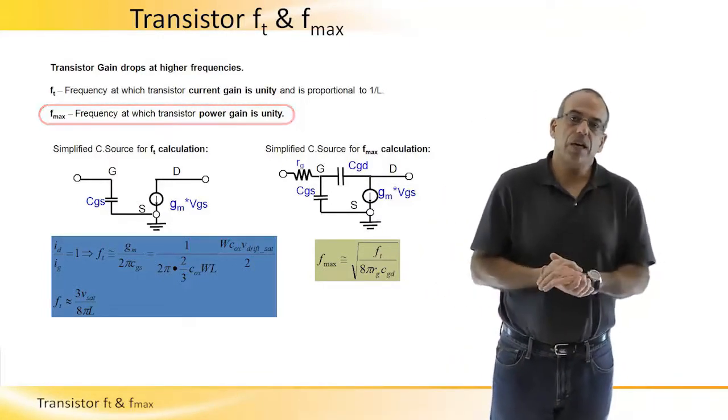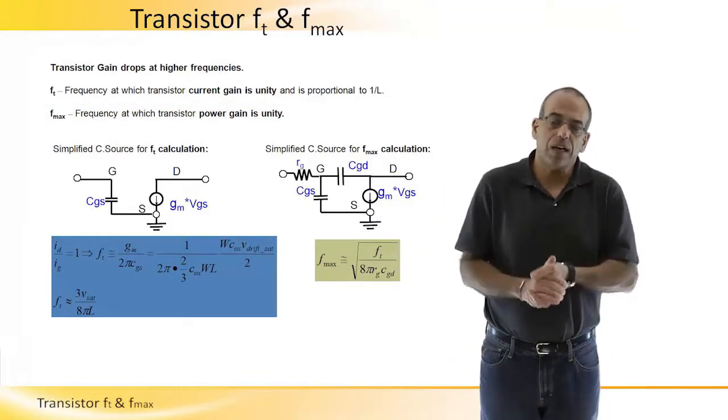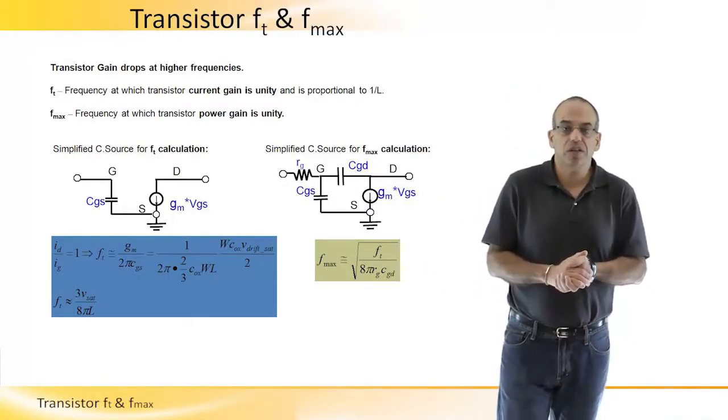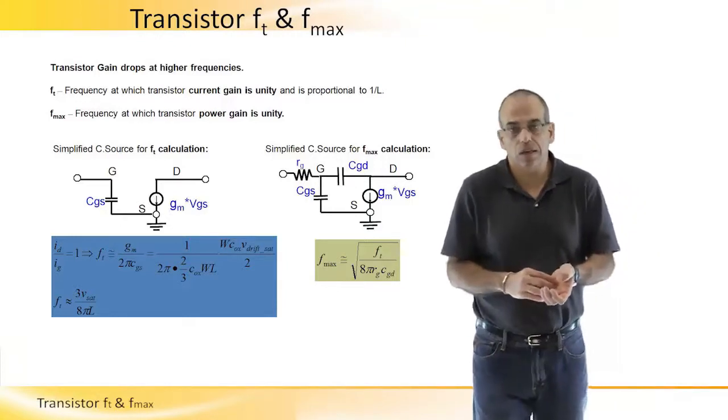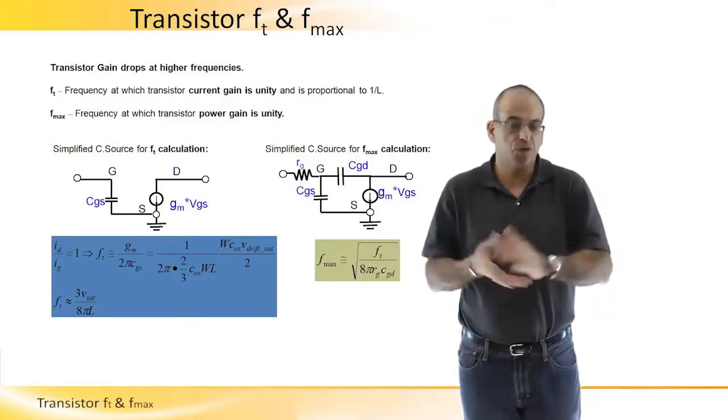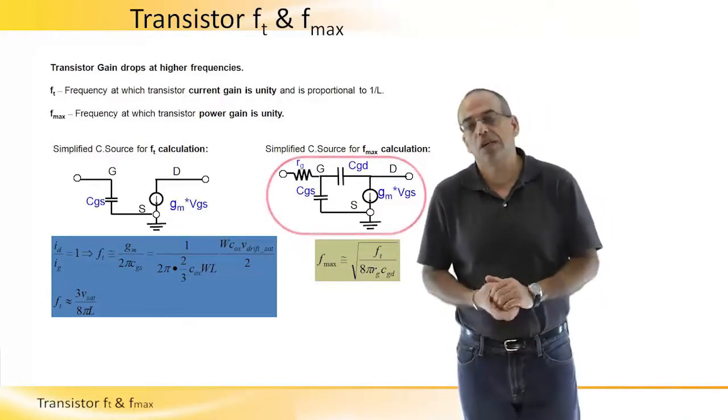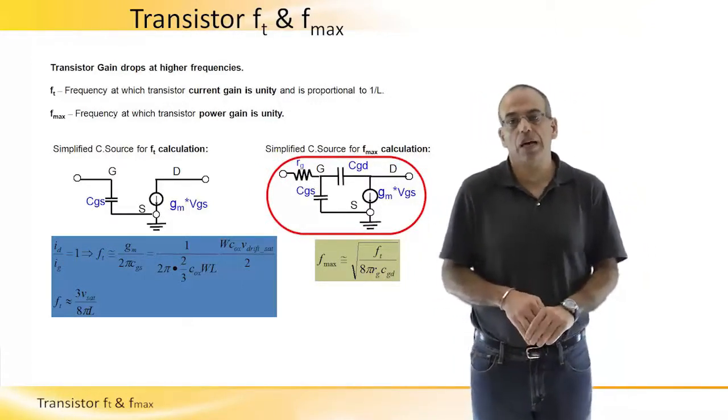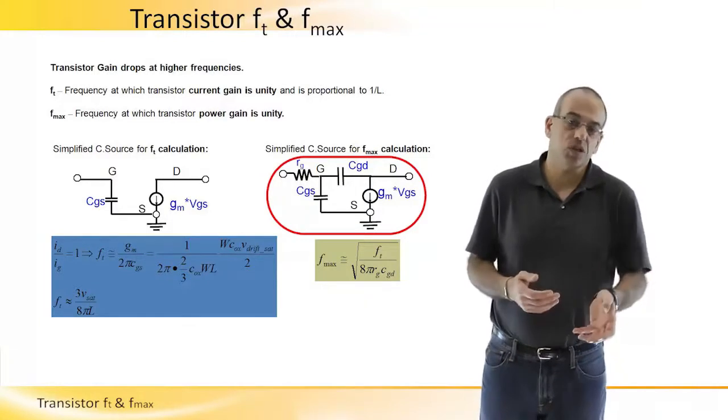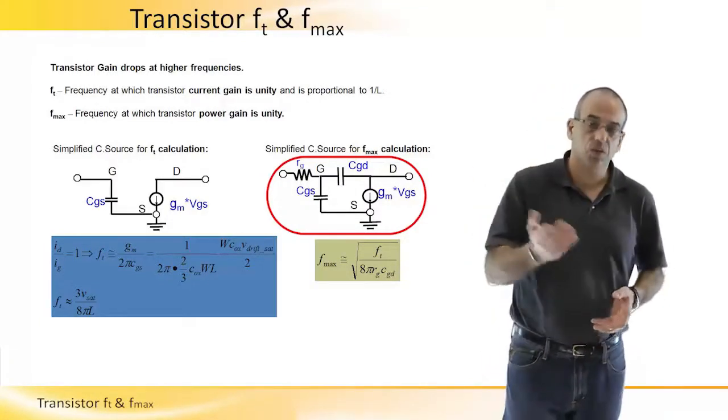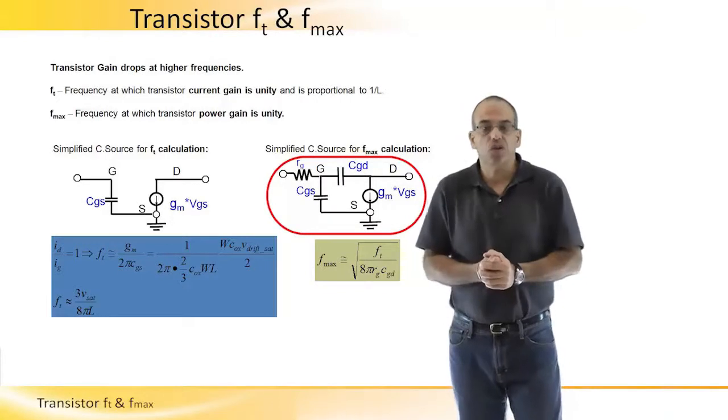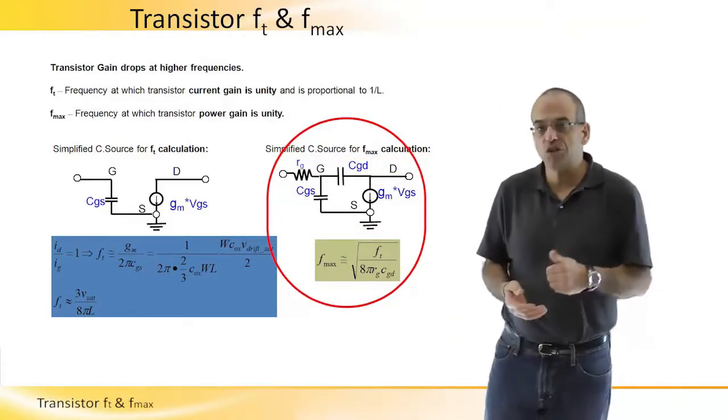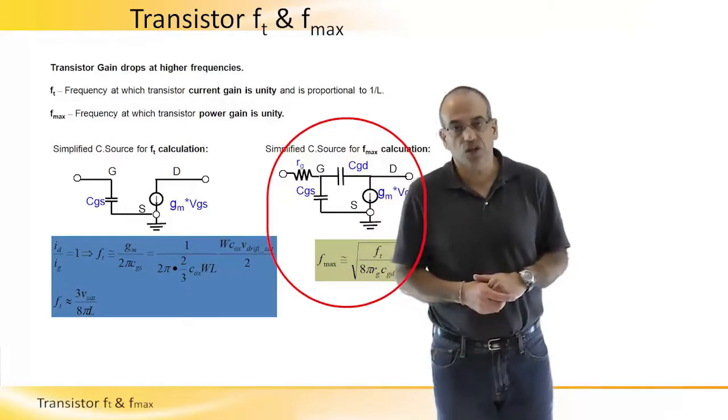To really analyze this frequency or where this frequency is coming from, we need a much fuller model. As you can see on the right hand side, we need RG and CGD. The Fmax will be proportional to the square root of Ft and reversely proportional to the square root of RG and CGD.